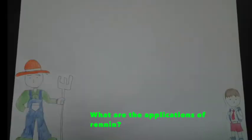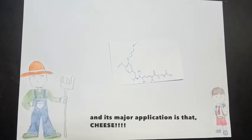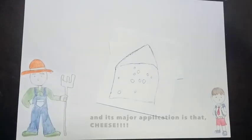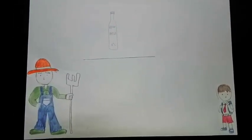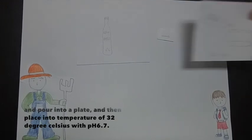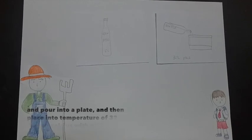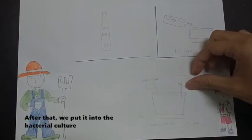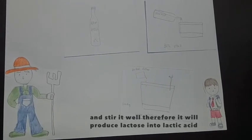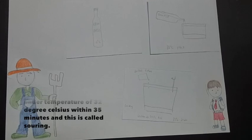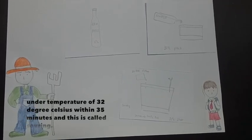What are the applications of renin? As we know, this is a structure of renin and its major application is cheese. First step in cheese processing starts with raw milk. This raw milk is extracted directly from a cow and poured into a vat and then placed at a temperature of 32 degrees Celsius with pH 6.7. After that, we add bacterial culture and stir it well. Therefore, it will produce lactic acid from lactose under temperature of 32 degrees Celsius within 35 minutes and this is called souring.